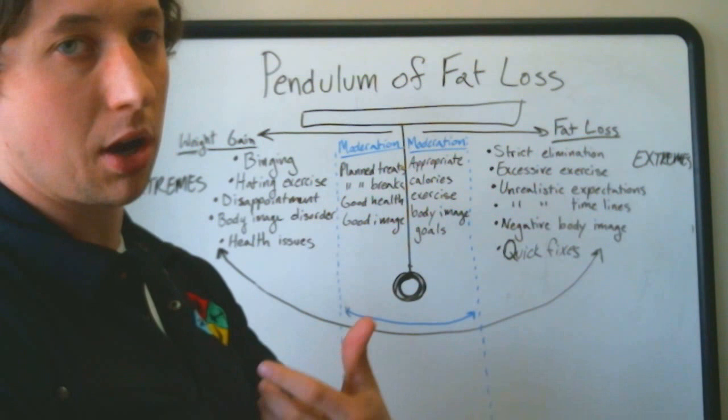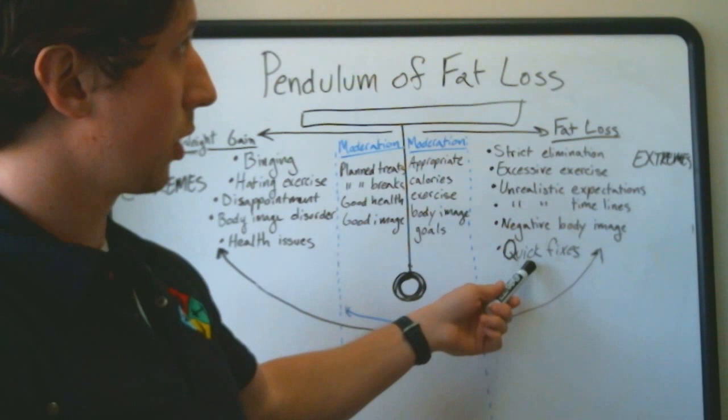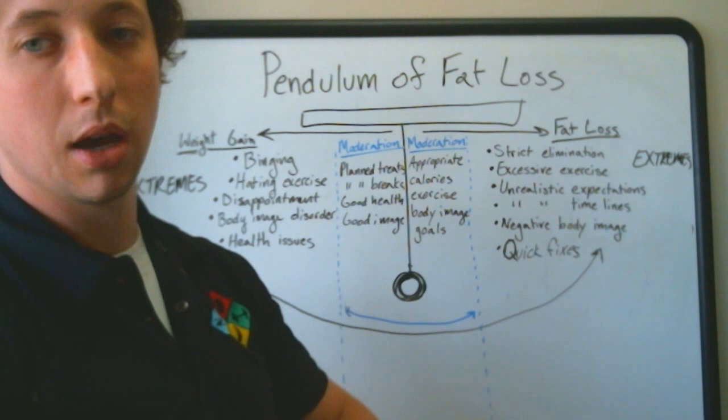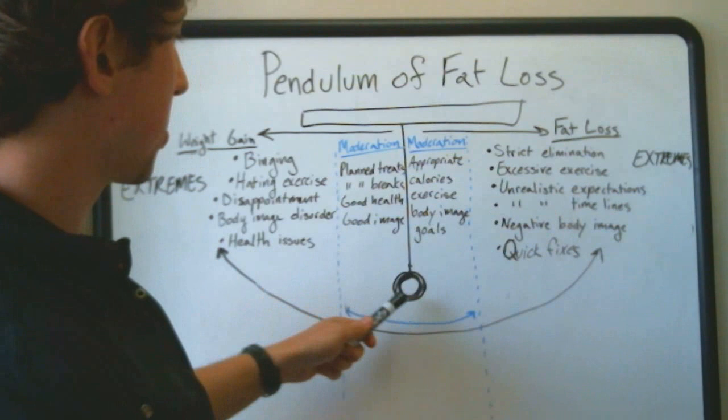Negative body image. If we're obsessing about the scale, if we're just constantly beating ourselves up for the way that we look, that's another extreme. And also looking for quick fixes. This may be a surgical procedure, this may be a supplement, a pill, something like that. Once again, we're going to extremes.